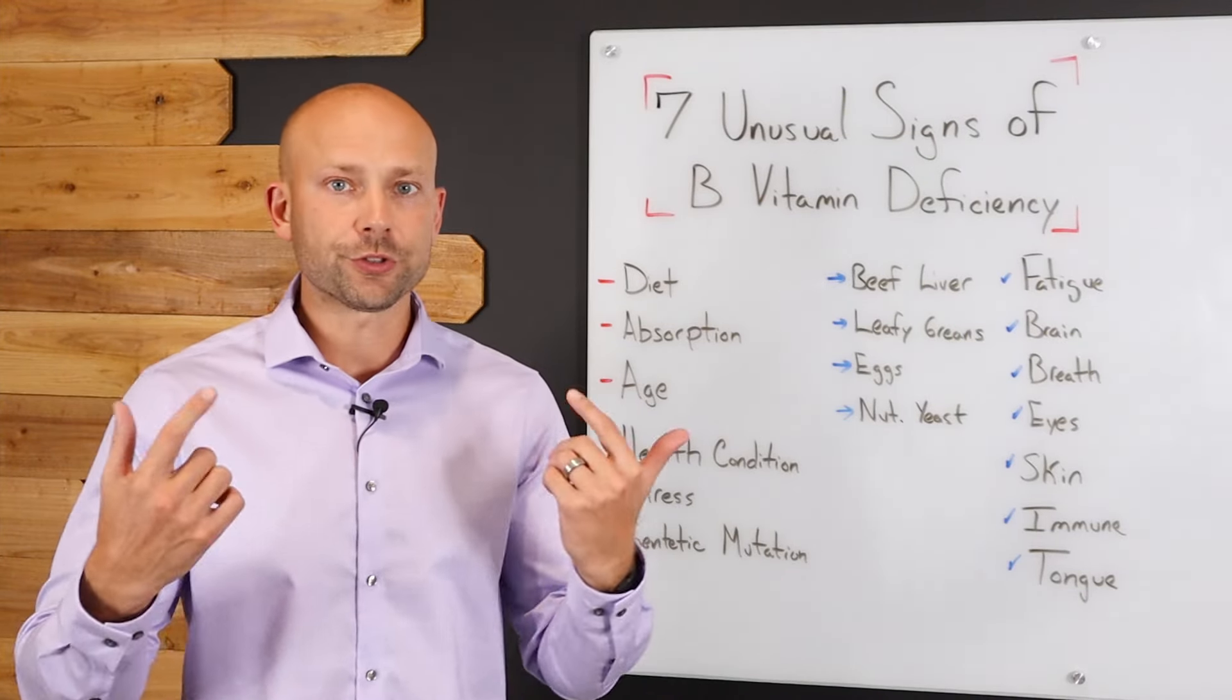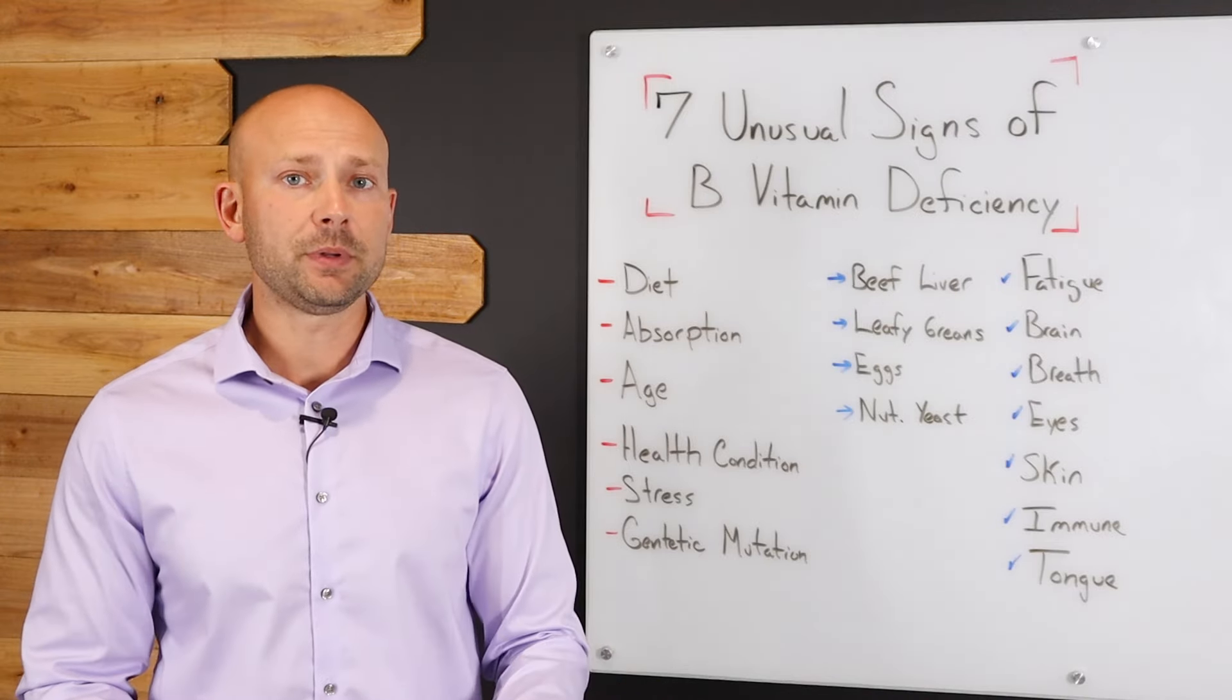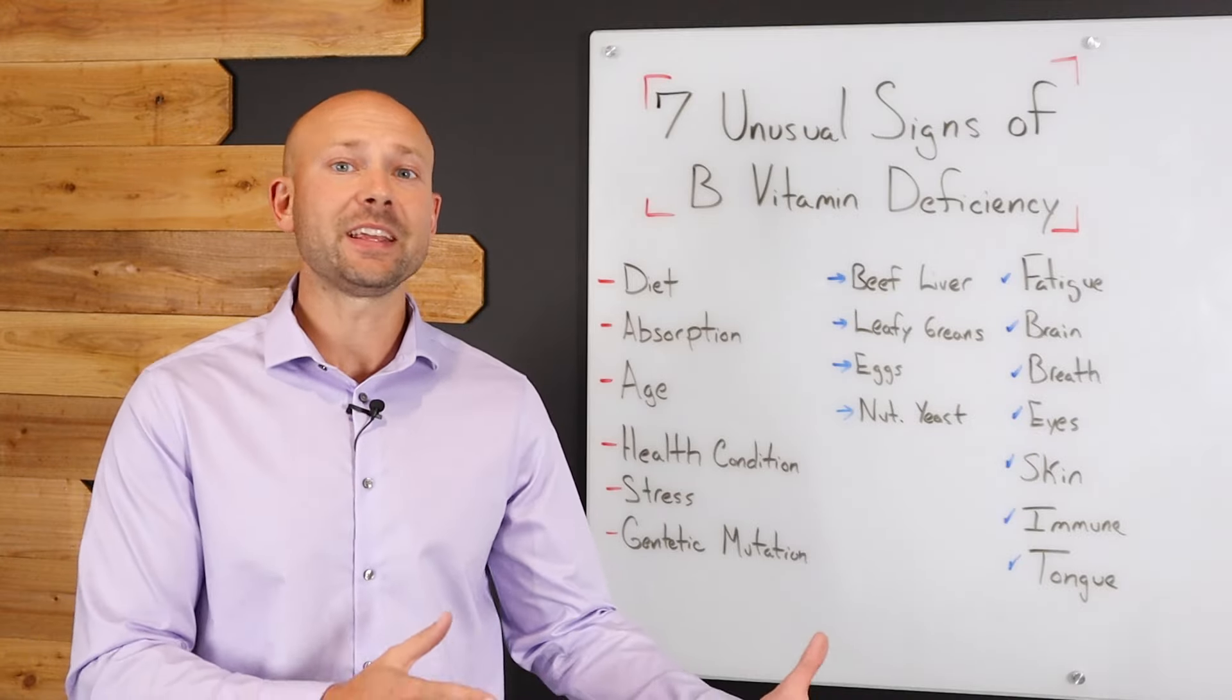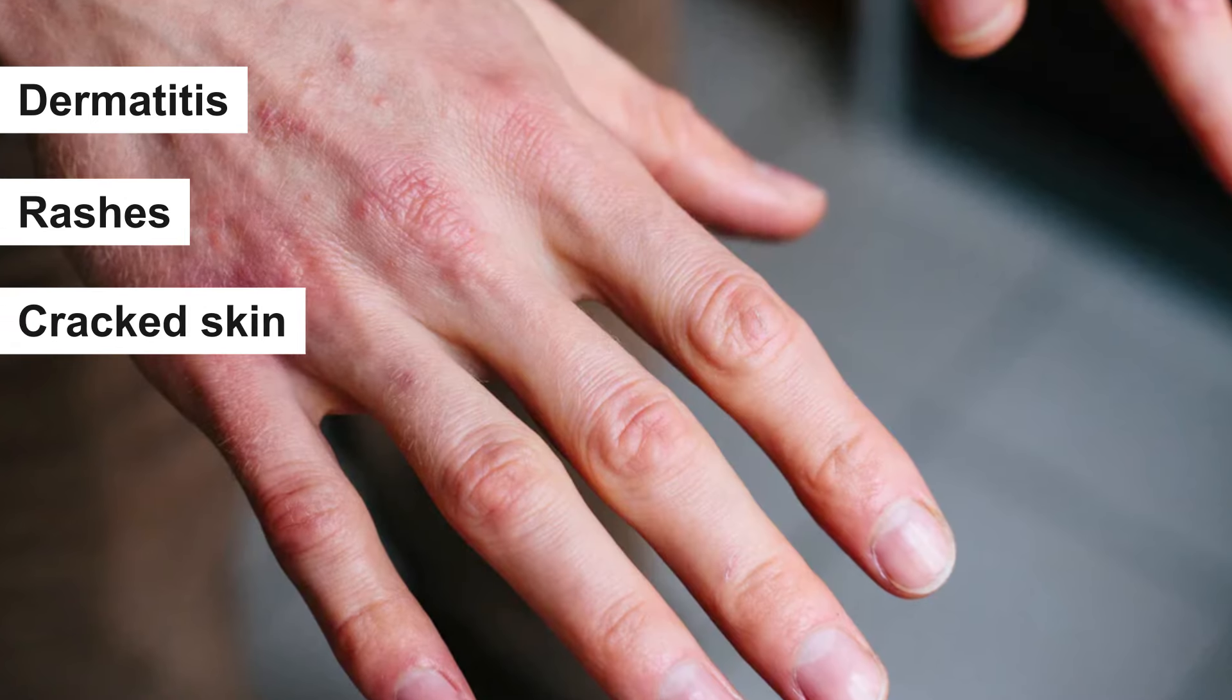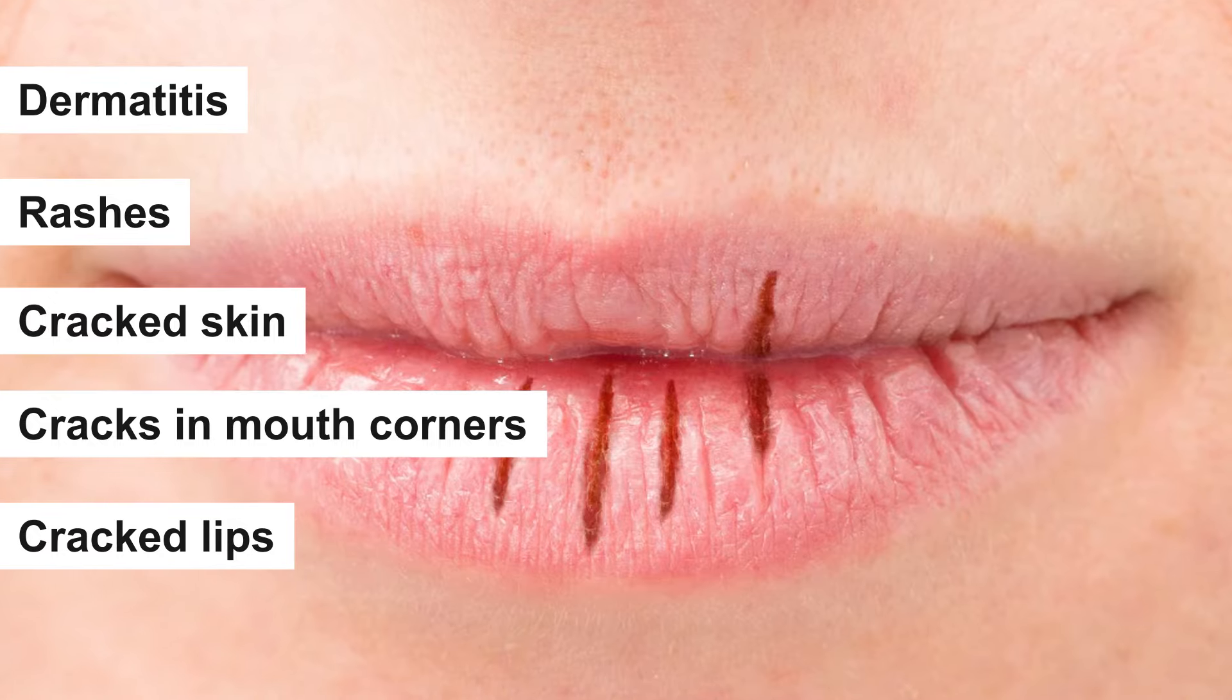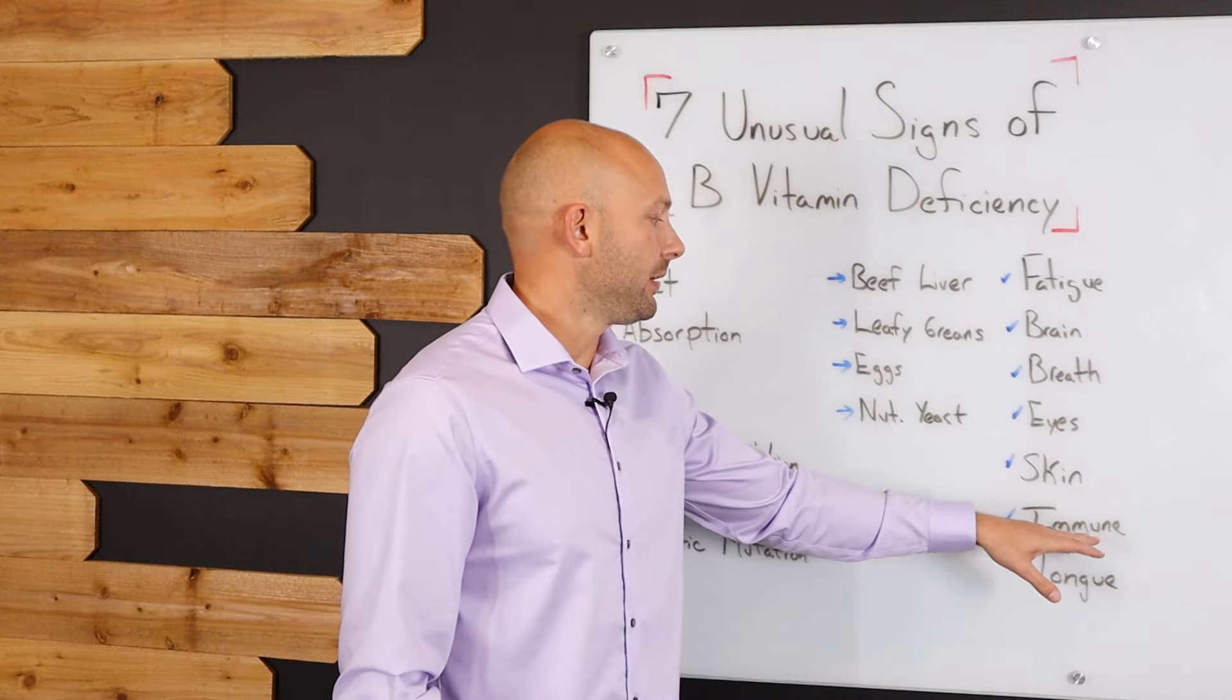So that's something that it's like, you got to get your wheels turning as to like, Hey, how can I actually start improving my health across the board? And like I said, a B vitamin deficiency is pretty common. The good news is it's very easy to fix. Skin conditions. You can get dermatitis, you can get rashes, you can get cracked skin. A lot of people get cracked corners in their mouth or cracked lips. So you want to make sure that if you're suffering from that, you're paying attention to the B vitamin factor.